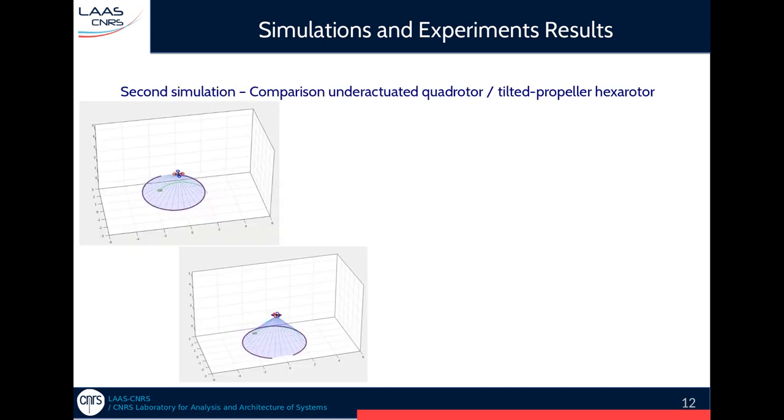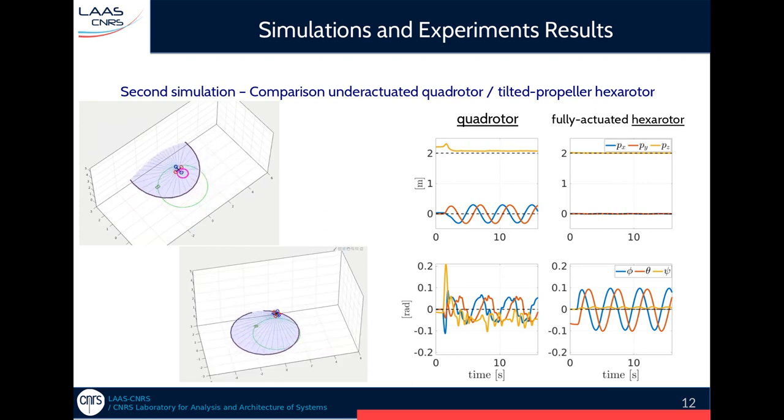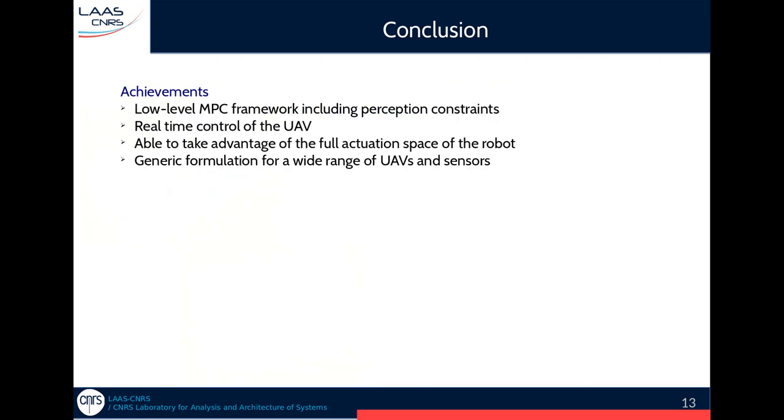The last scenario that I want to present is this one. We wanted the quadrotor, the UAV, to stay in a given position while maintaining the visibility of the target during this circular green motion. For the quadrotor, in order to modulate its attitude, it had to modulate its position, and indeed, the attitude tracking is a bit chaotic, whereas the fully actuated hexarotor had the almost perfect position tracking and only the attitude is slightly modulated to maintain the visibility.